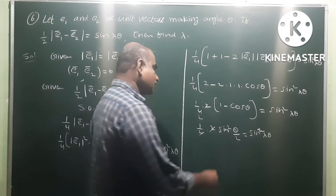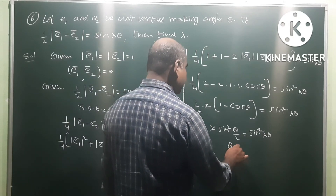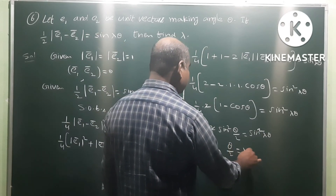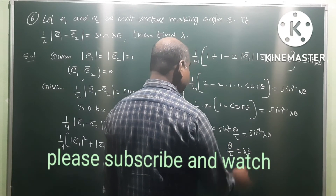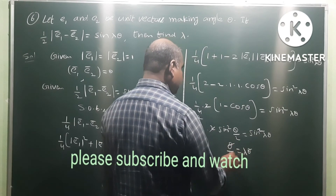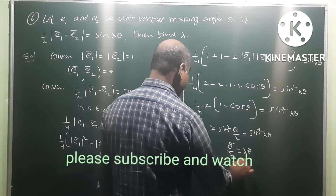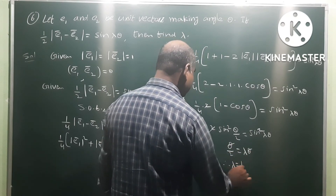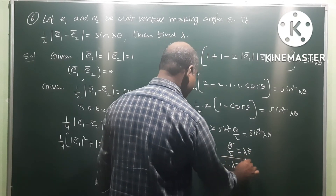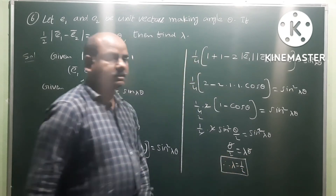Comparing both sides: sin squared(theta/2) equals sin squared(lambda*theta). Cancelling sin squared and theta, we get theta/2 equals lambda*theta, so lambda is equal to 1/2. This is the answer.